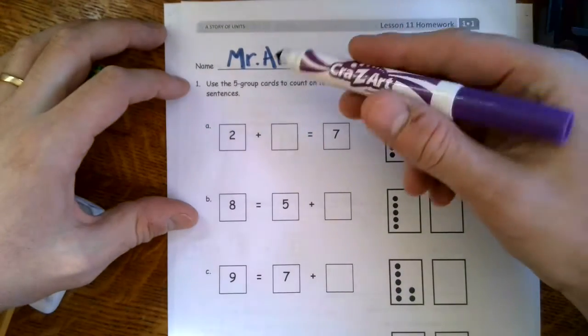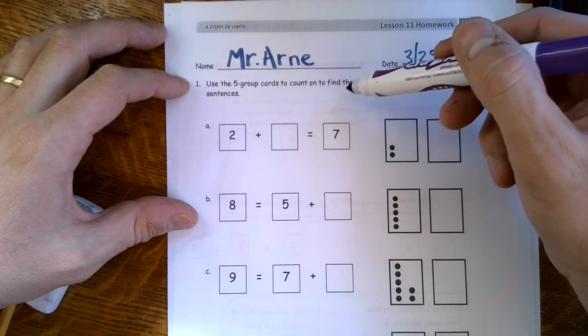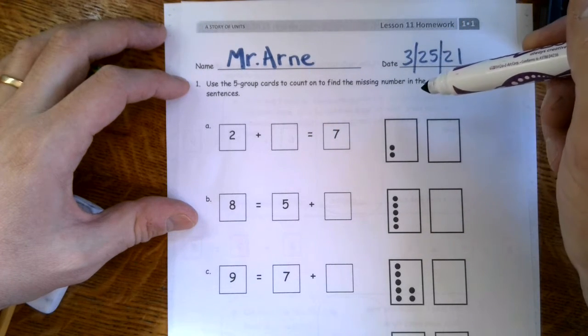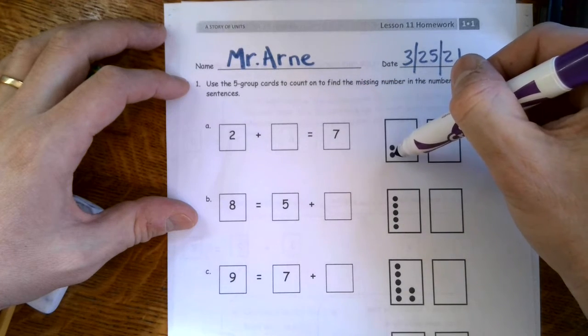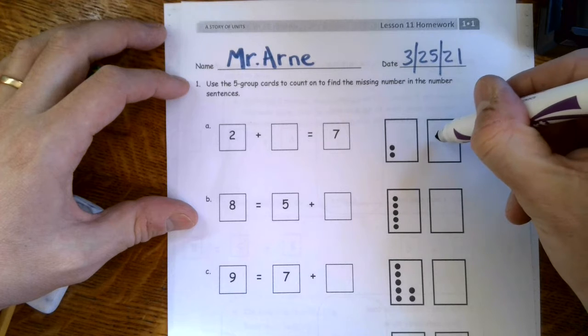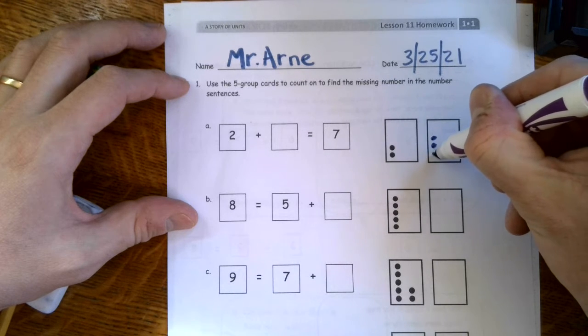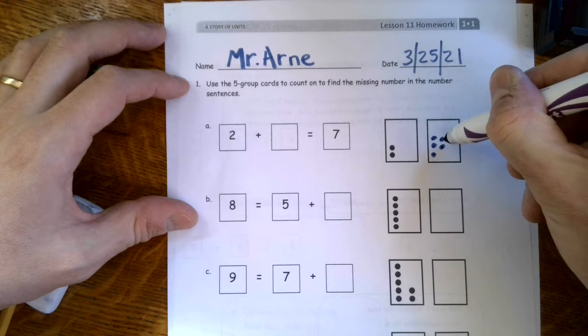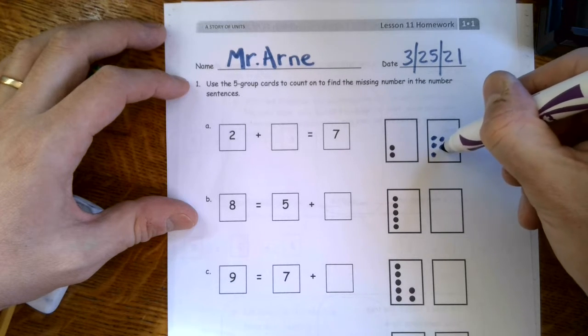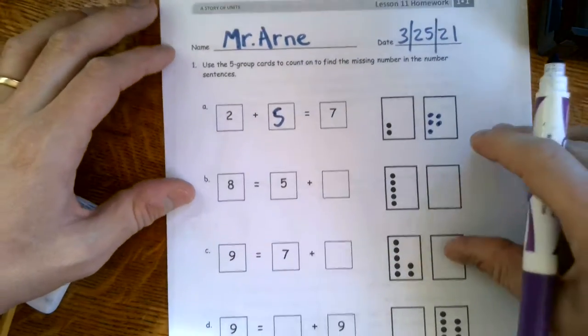Let's take a look at what we're doing here. It says use the five group cards to count on to find the missing number in the number sentences. One, two, and we see one, two, and we're trying to get to seven. So here we go. One, two, three, four, five, six, seven. Oh my goodness. So that would make one, two, three, four, five. Count those little ones and you put that number in there. Bingo.